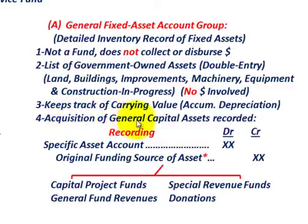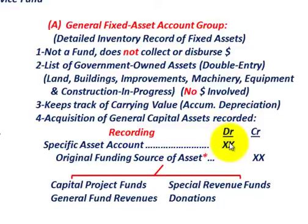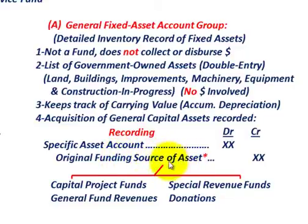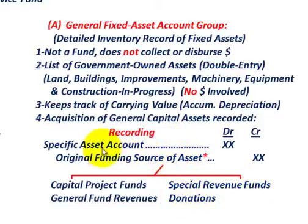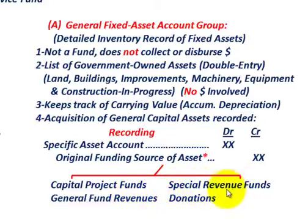The acquisition of any general capital assets is recorded as follows. First, you'd have the specific asset account as a debit. Then for the credit, you'd have the original funding source of the asset. That funding source would be either the capital projects fund, general fund revenues, a special revenues fund, or donations. So that's our basic recording — the specific asset account debited, and then the original funding source credited.